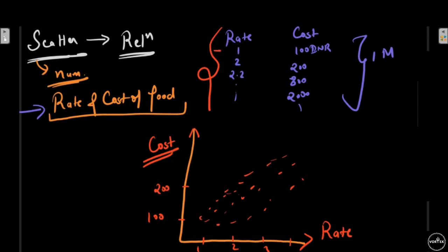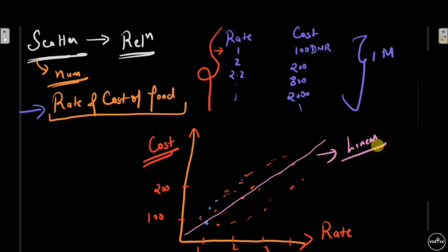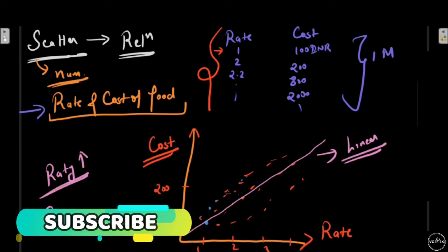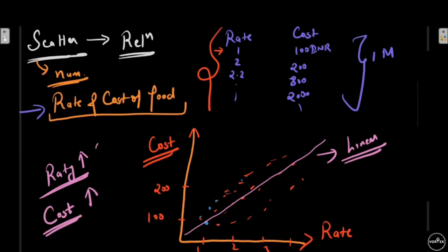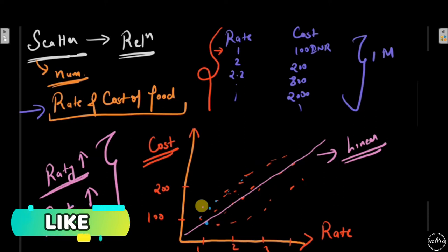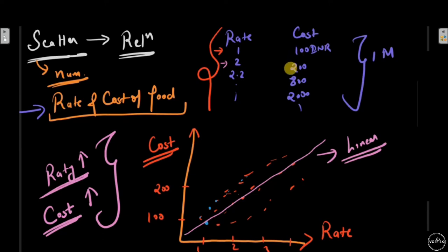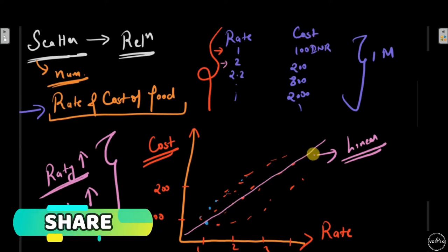If my first observation is rating 1 and cost 100, that's one data point. We have lots of data points with different observations. Looking at the scatter plot, we can see approximately a linear trend — meaning as the rating of a restaurant increases, the cost also approximately increases. We plotted all the pairs of rate and cost of food and came up with a meaningful conclusion. Not rocket science.